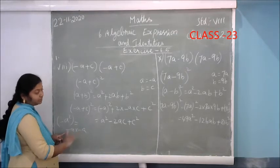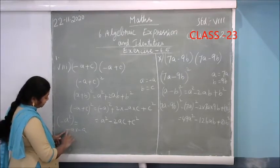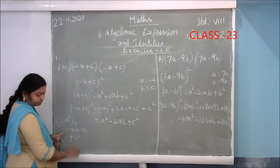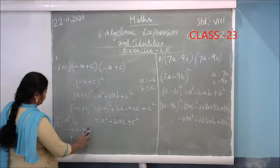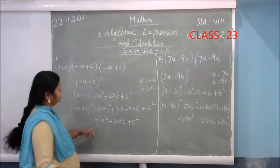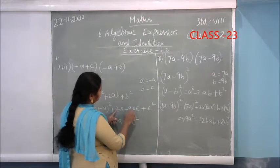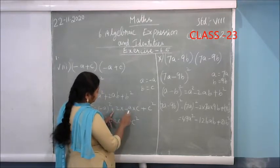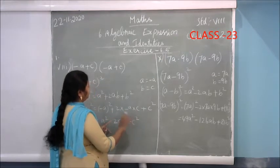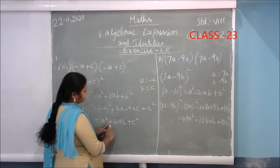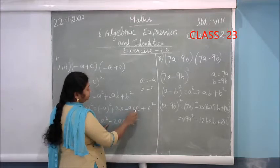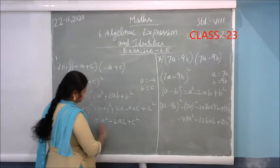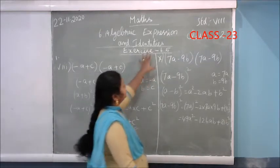Now simplify: (-A)×(-A) gives A². Minus into plus is minus, so 2×(-A)×C gives -2AC. Plus C². So the answer is A² - 2AC + C². The next one is (7A - 9B)²; first find the identity. The sign is different, so the second identity — (A-B)² — will come.